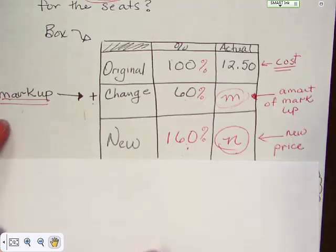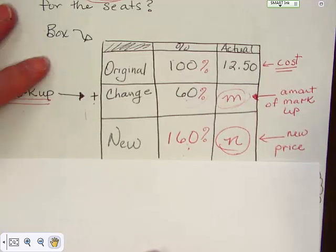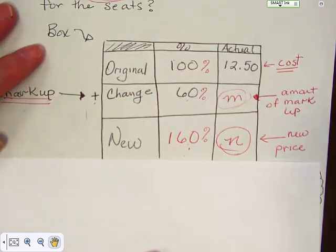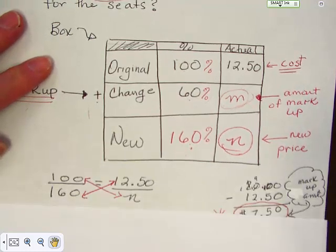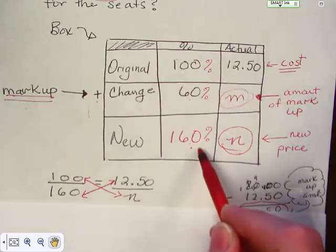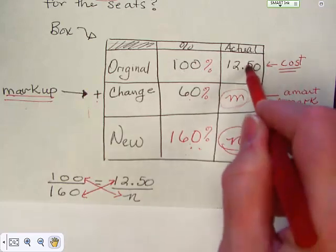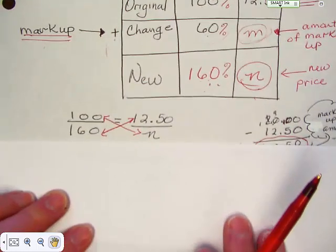So this is definitely something that you're going to use in your future, because you're always going to get into a situation where you have to sell something or you have to figure out a price to sell it at. And if you want to make a little profit you have to know how much profit. So this is definitely usable. Okay. Set it up. You've got 100 over 160 equals 12.50 over n. So there's your problem.